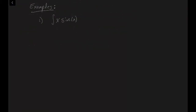So let's look at some examples to see where this can actually be used. First, let's look at the integral of x sin(x) dx. We're going to try U equals x and dV equals sin(x) dx. That tells us that dU is going to be dx, and V is going to be the integral of sin(x), which is negative cosine of x.